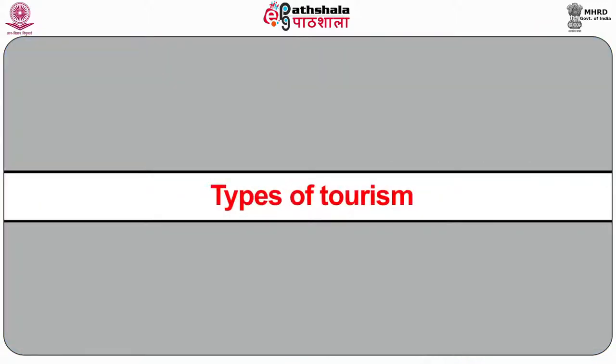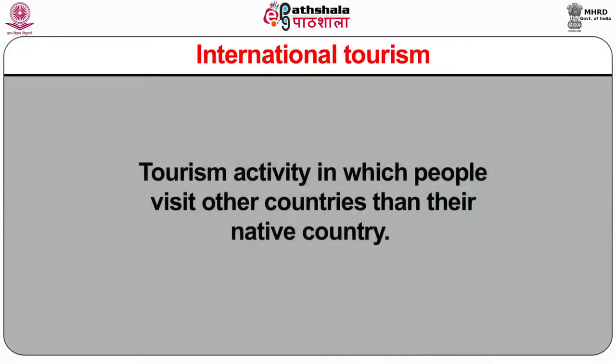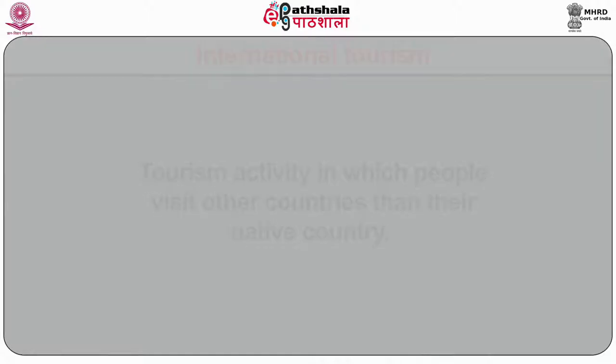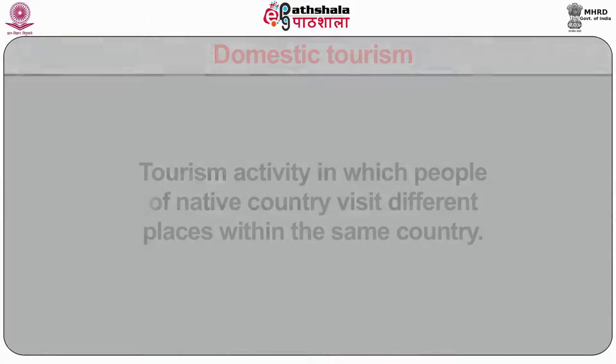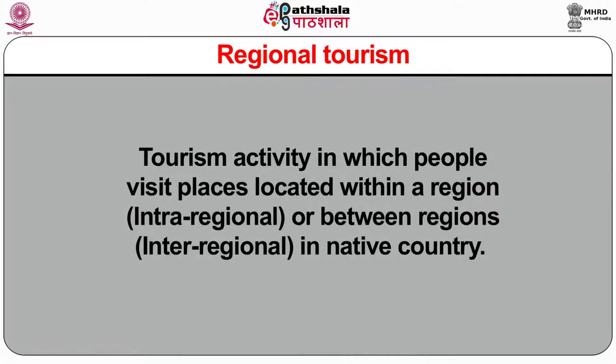There are various types and forms of tourism elaborated as follows. Broadly, there are three types of tourism: International tourism — tourism activity in which people visit other countries than their native country. Domestic tourism — tourism activity in which people of the native country visit different places within the same country. Regional tourism — tourism activity in which people visit places located within a region, intra-regional or between regions, inter-regional, in the native country. The tourism types can further be categorized on different bases like distance, direction, number, etc.